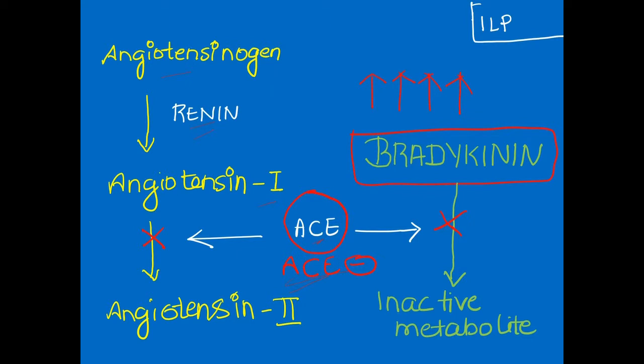So what happens when you give ACE inhibitors is that bradykinin breakdown will be reduced or inhibited. Thereby, ACE inhibitors will increase the bradykinin concentration in the body, which is the main culprit for causing the dry cough.